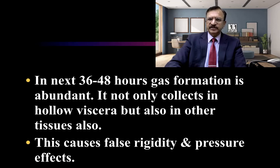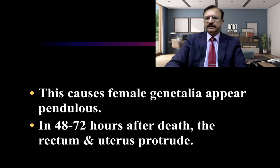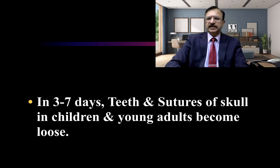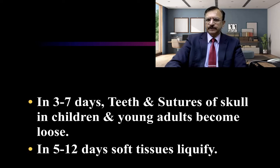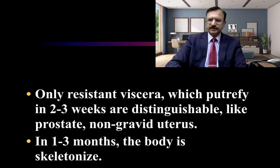If the uterus is gravid and containing a fetus, it can be expelled out. The female genitalia become pendulous, and in 48 to 72 hours after death the rectum and uterus protrude because of the pressure effects. In 3 to 7 days the teeth and sutures of the skull in children and younger adults become loose. In 5 to 12 days the soft tissues liquefy, and only the resistant viscera, which persist for 2 to 3 weeks, are distinguishable, like the prostate and non-gravid uterus. In 1 to 3 months the body is skeletonized.